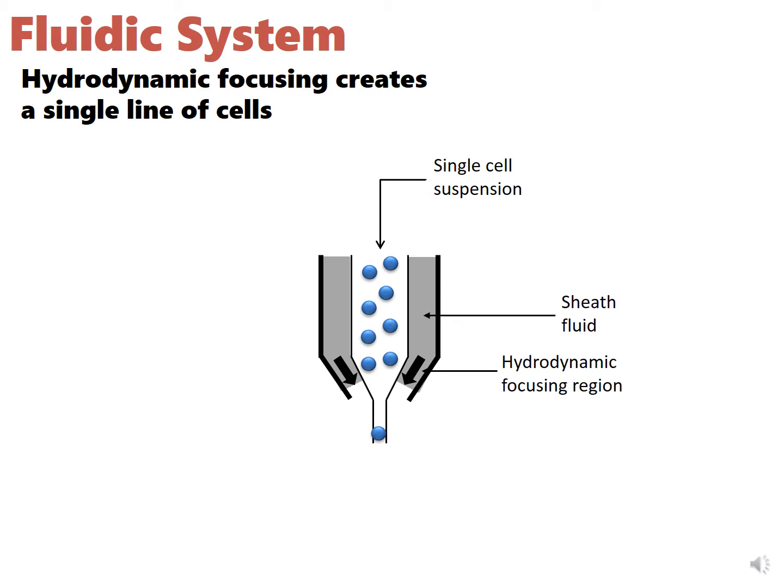The fluidic system is made up of a central core through which sample fluid is injected. This is enclosed by an outer sheath fluid. Both of these fluids are pushed through the system at slightly different pressures. Since the sheath fluid is under a higher pressure, it moves faster, creating a drag effect which will cause the sample in the central core to narrow. This process is called hydrodynamic focusing and results ultimately in a single line of particles.